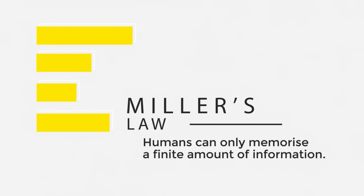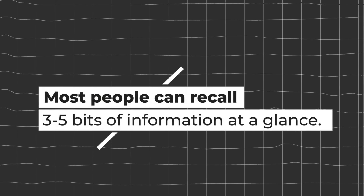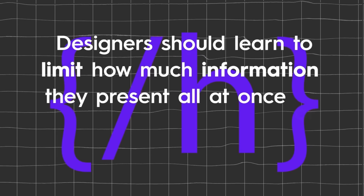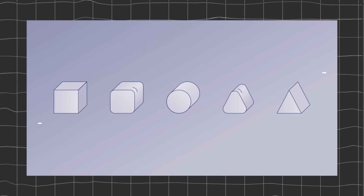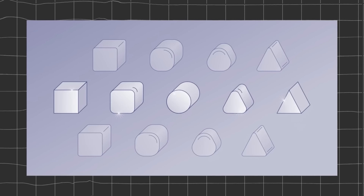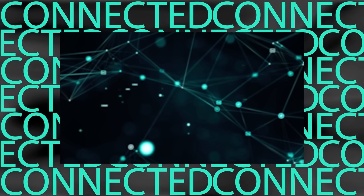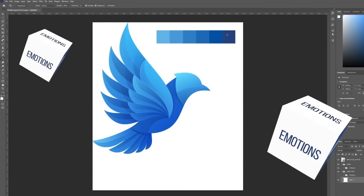Miller's law dictates that humans can only memorize a finite amount of information. The amount varies from person to person, but most people can recall three to five bits of information at a glance. Designers should limit how much information they present at once, or break things down into a hierarchy of importance — making the most important things stand out a little more than everything else. You can see how all of these laws and techniques intertwine with each other.